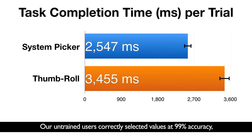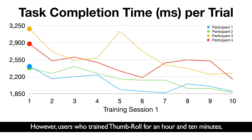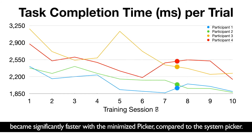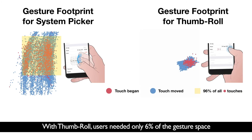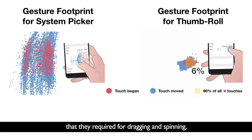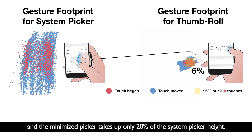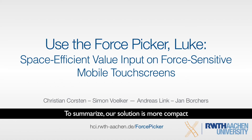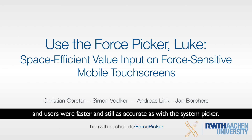Our untrained users correctly selected values at 99% accuracy, but were slower than with the system picker. However, users who trained thumb roll for an hour and 10 minutes became significantly faster with the minimized picker compared to the system picker. With thumb roll, users needed only 6% of the gesture space required for dragging and spinning, and the minimized picker takes up only 20% of the system picker height. In summary, our solution is more compact and users were faster and still as accurate as with the system picker.